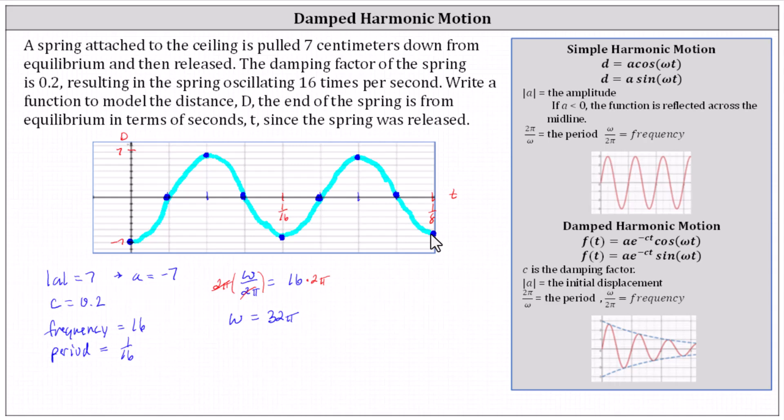Now looking at the graph, we can see why we're going to be using the cosine function rather than the sine function. This resembles the graph of the basic cosine function when reflected across the midline, which is another reason why we're using a equals negative 7.